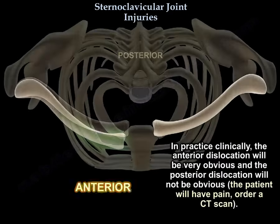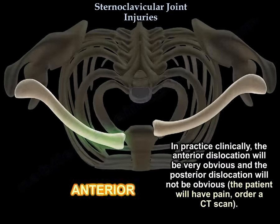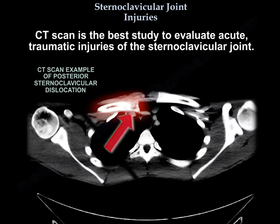Clinically, the anterior dislocation will be very obvious, and the posterior dislocation will not be obvious, but the patient will have pain and you order a CT scan. CT scan is the best study to evaluate acute traumatic injuries of the sternoclavicular joint.